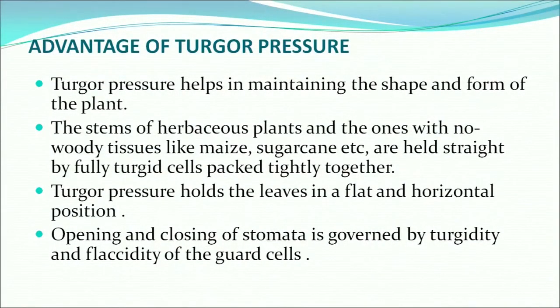What is the advantage of turgor pressure? Turgor pressure helps in maintaining the shape and form of the plant. The stems of herbaceous plants with no woody tissues — like maize, sugarcane, etc. — are held straight by fully turgid cells packed tightly together. Turgor pressure also holds the leaves in a flat and horizontal position. In addition, the opening and closing of stomata is governed by the turgidity and flaccidity of the guard cells.